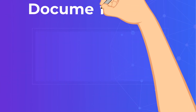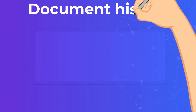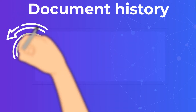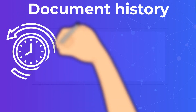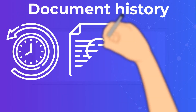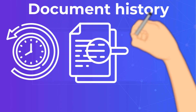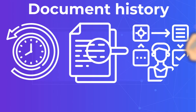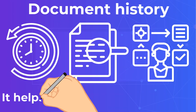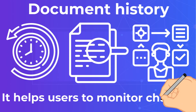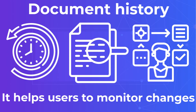Document History: being able to track the change history of documents is a non-negotiable feature for DMS software. It helps users to monitor changes to documents and retrieve previous versions when necessary. This contributes to workflow optimization.